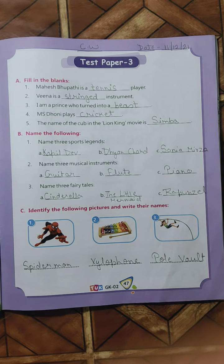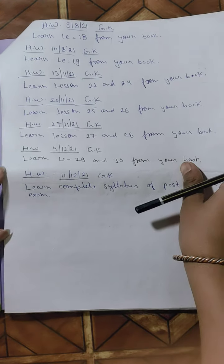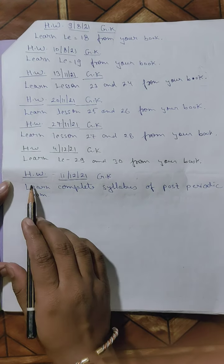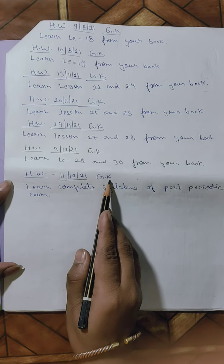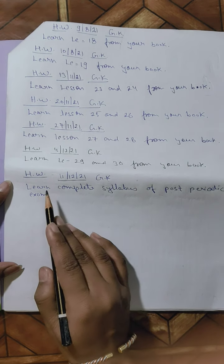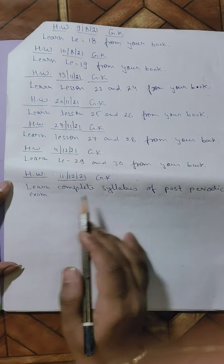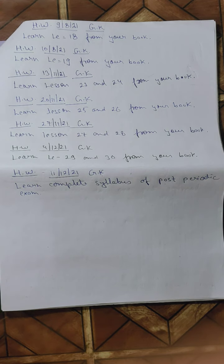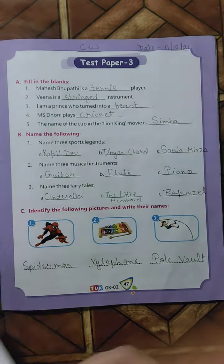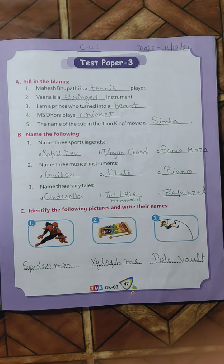Now it is homework time. Write down your today's homework. Date is 11th, 12th, 2021. GK homework: learn the complete syllabus of the post periodic exam. As you all are having exams, keep learning the things and keep revising the things. So I hope it is clear to you all. Thank you so much. See you in the next video.